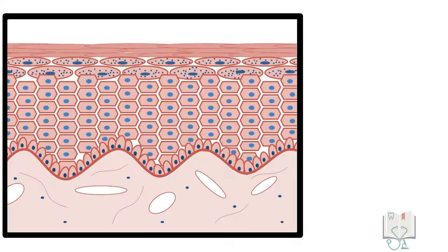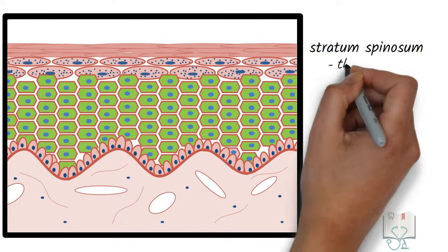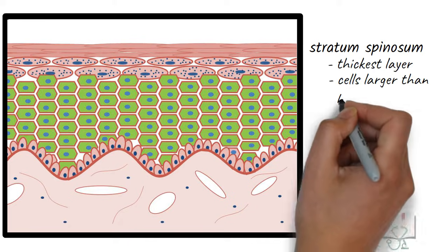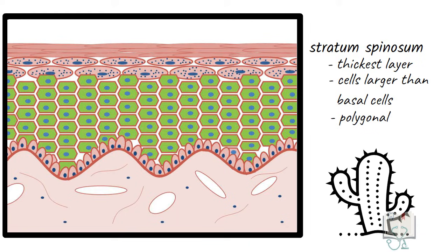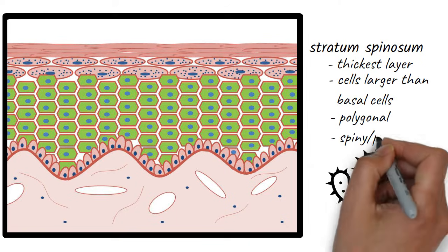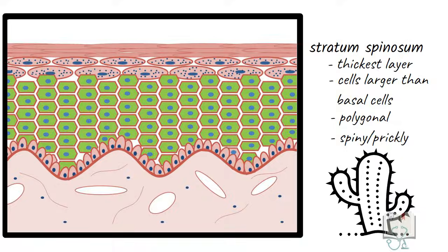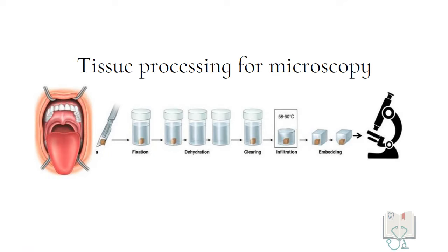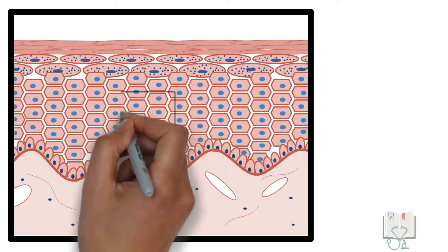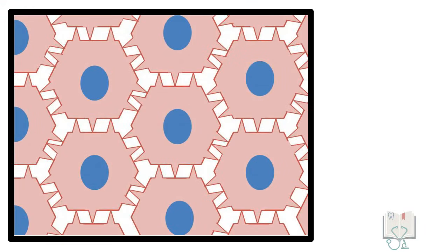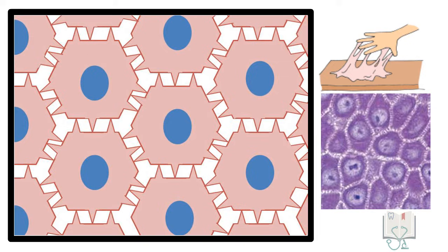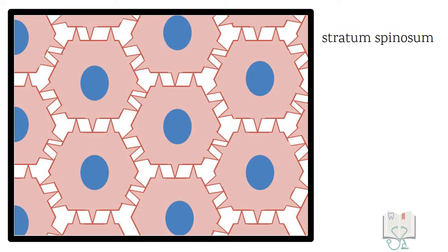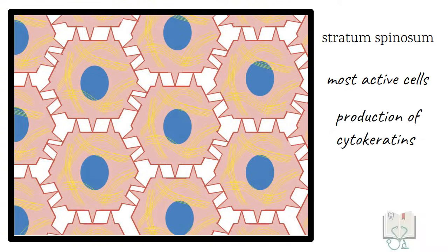Stratum spinosum is the layer above the stratum basale and is the thickest layer. The cells in this layer are larger than basal cells and are polygonal in shape. The cells show minute cytoplasmic extensions which give them a spiny or prickly appearance. This is because during tissue preparation for microscopic analysis, due to dehydration the cells shrink, but being attached to each other at the desmosomes, they produce cytoplasmic extensions maintaining the intercellular junction. Among all the layers, this layer is most active in protein synthesis for production of cytokeratins.